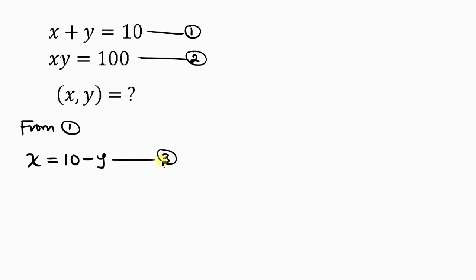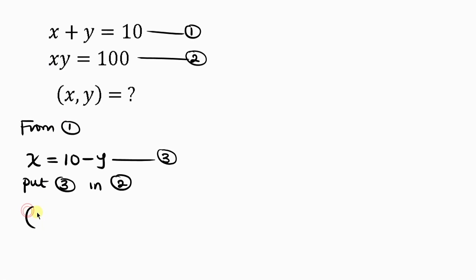The next step is to substitute equation 3 into equation 2. That means wherever I see x, I'm going to put 10 minus y. So this is xy: for x I'll put 10 minus y, times y, and this equals 100.